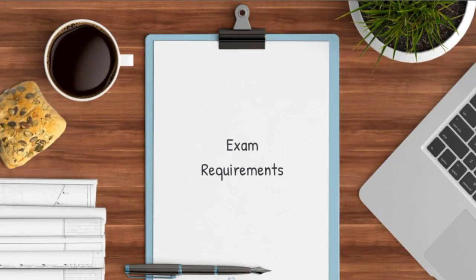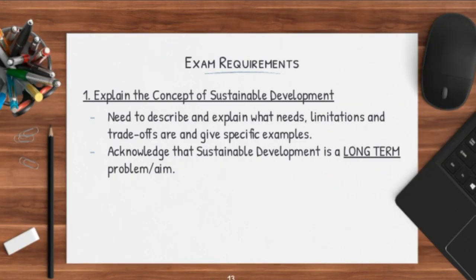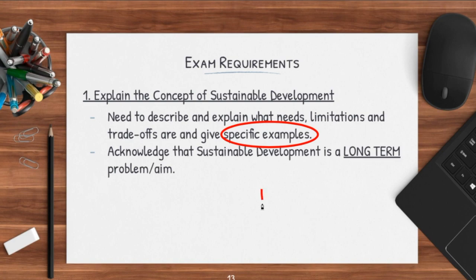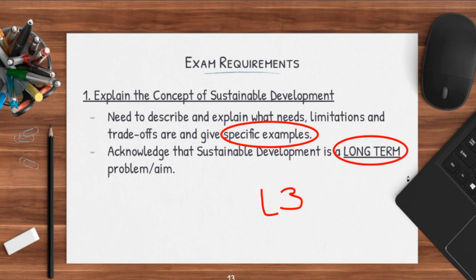Now for the exam requirements — these are the important parts. An example of a question would be to simply explain the concept of sustainable development. This can come in the form of a 12-mark essay. For these kinds of questions, all you do is describe and explain what needs, limitations, and trade-offs are, and give specific examples — examples are very important. One more thing that gets you to a higher level, possibly an L3 out of 9, is to acknowledge the fact that sustainable development is a long-term aim or problem. Sustainable means it is already a long-term thing, so you have to acknowledge that you can't achieve it in the short term — it takes a long time and a lot of effort.